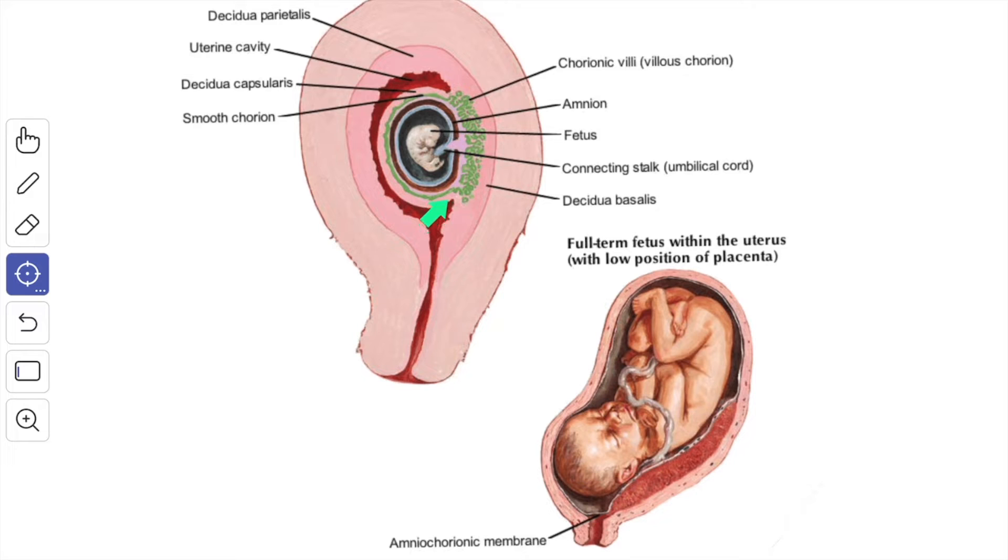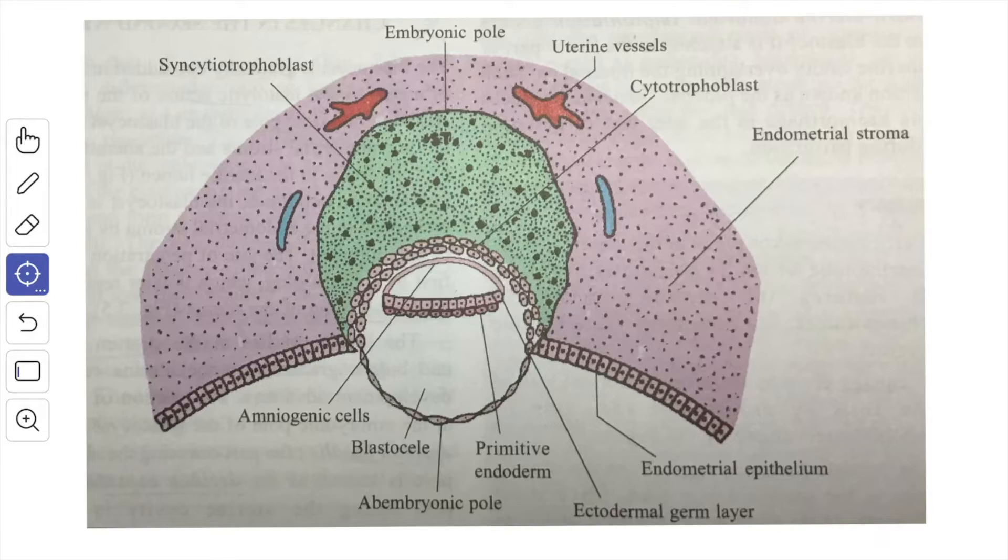The decidua basalis is situated at the embryonic pole of the blastocyst and the capsularis envelops the rest of the blastocyst and the parietalis lines the uterine cavity. The syncytia trophoblast proliferates into multi-layered and multi-nucleated protoplasmic mass and advances towards the decidua basalis and capsularis by proteolytic action.